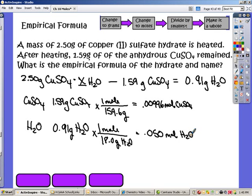So the next part of our little rhyme up here, change it to grams, change it to moles, divide by the smallest and make it a whole. I need to divide by the smallest. So I pick the one that is the smallest of these two. Like I said, usually it's going to be the anhydrate. I don't know of any examples where it's not. So we're going to divide this by the .00996. And I'll divide this down here by .00996.